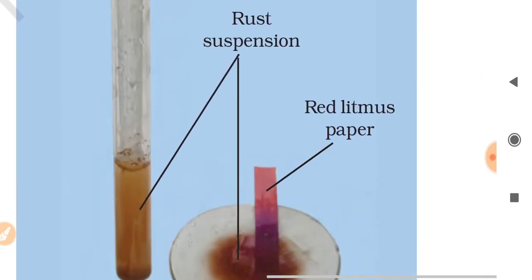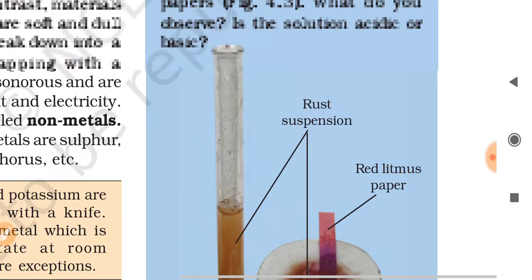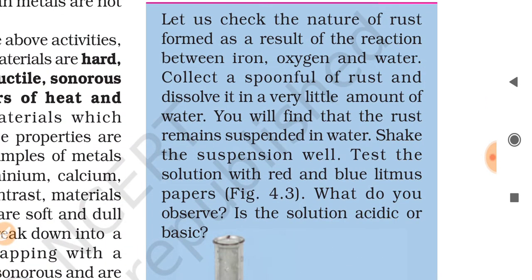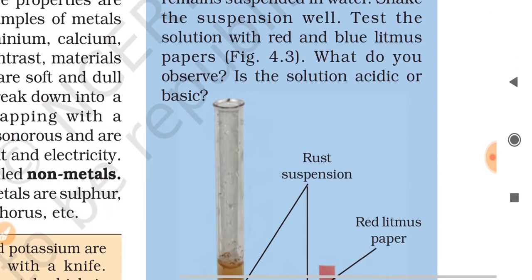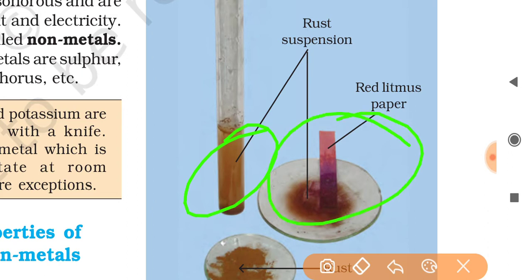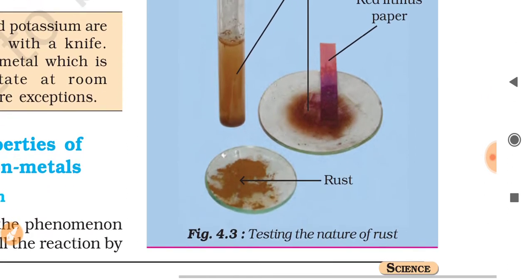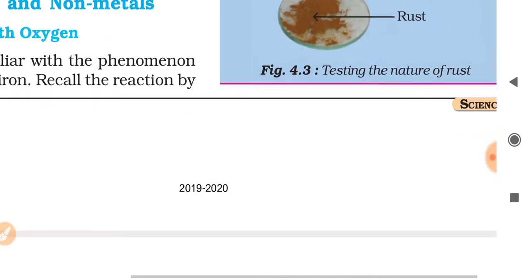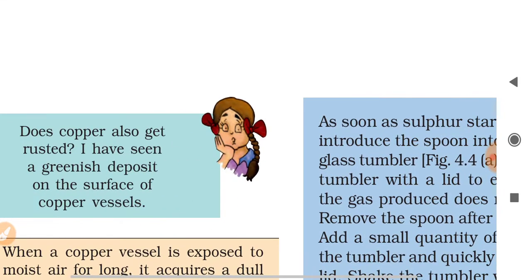What do you observe? Is the solution acidic or basic? You can see here when you collect a spoonful of rust and dissolve in water, when it suspends in water and when you check it with litmus paper, you have to see its color to find its nature.